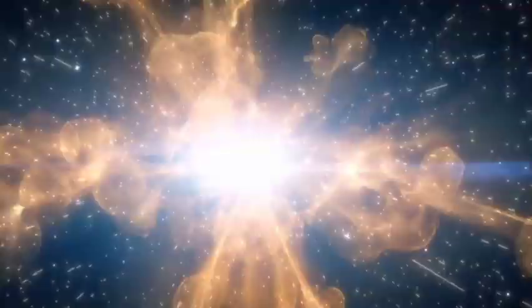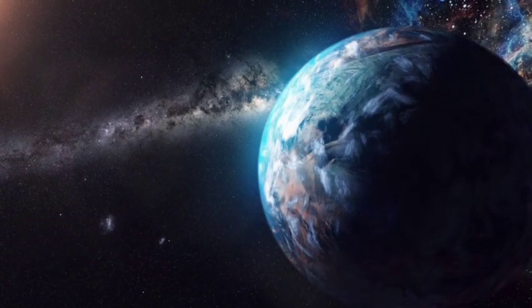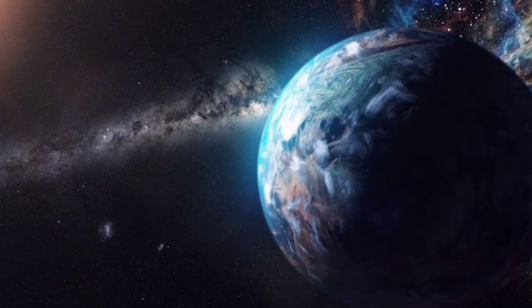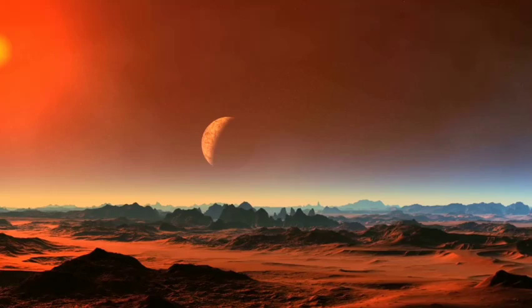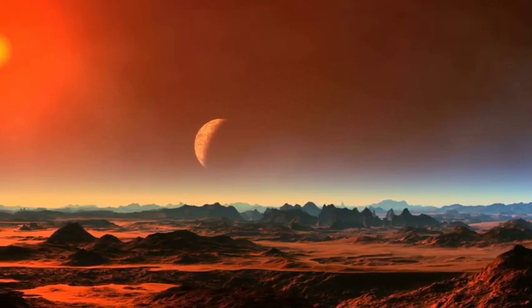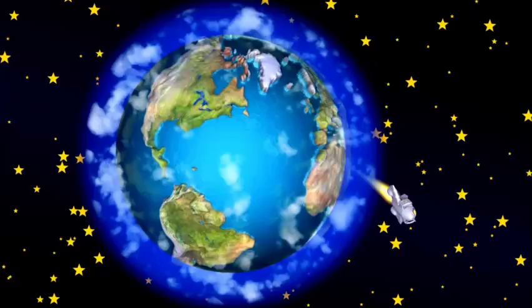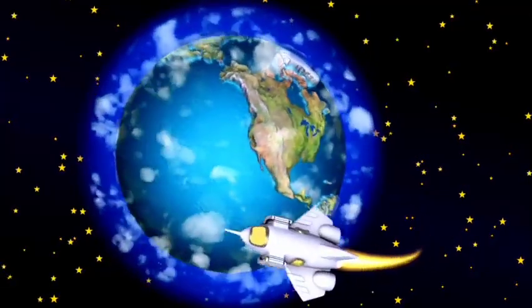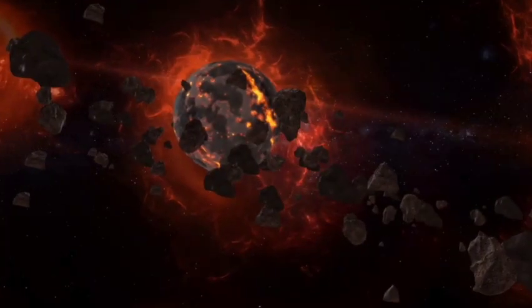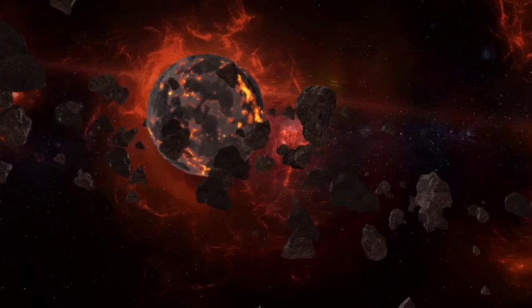These stars form the closest star system to our solar system. Proxima Centauri, also called Alpha Centauri c, is a red dwarf star located approximately 4.2 light-years from Earth. Despite being our closest stellar neighbor, it is not visible to the naked eye, with an apparent magnitude of 11.13.